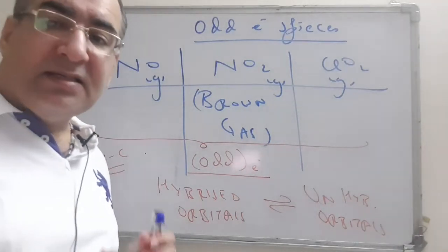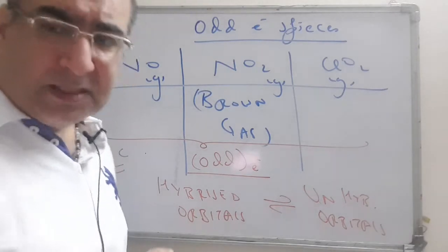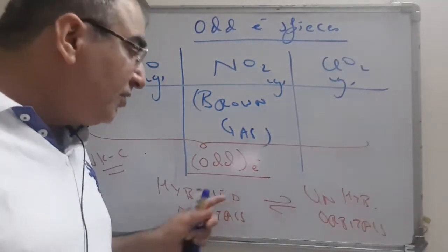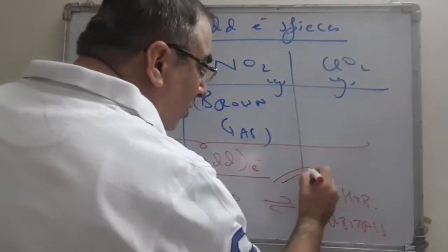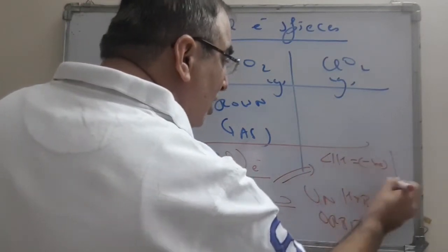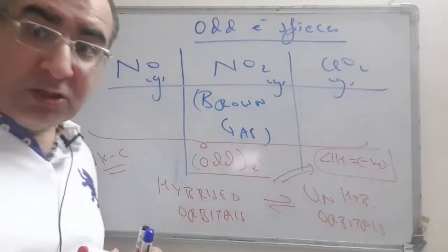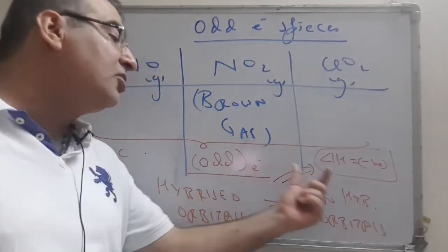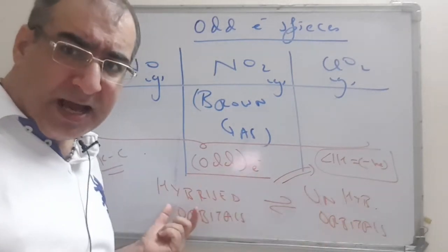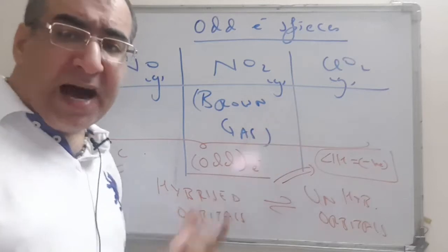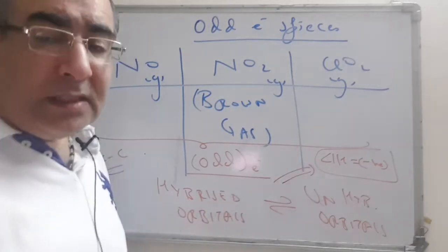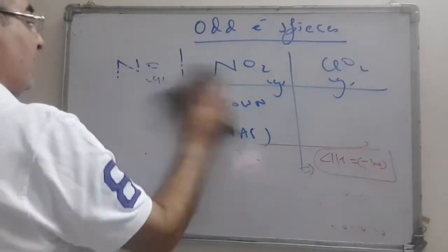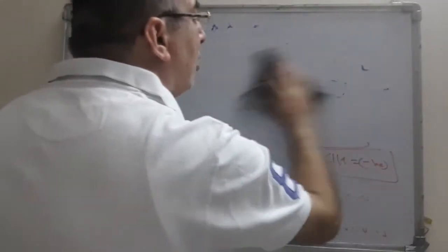Due to this, the electron will release a certain amount of energy, but that energy doesn't lie in the visible spectrum. So normally these gases are not colorful, except in some cases. By this way, the odd electron becomes a little more stable because it releases a certain amount of energy. The odd electron species is trying to randomize between hybridized orbitals and unhybridized — sometimes it will come in hybridization, sometimes it will not. By this randomization, the odd electron species will become a little more stable.